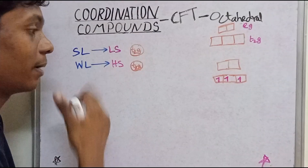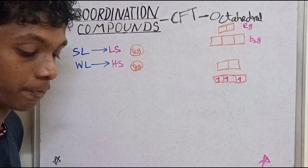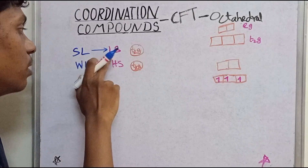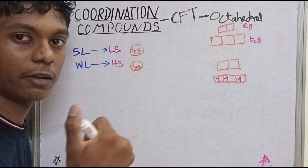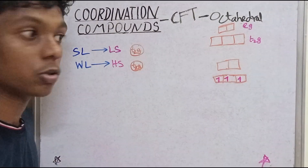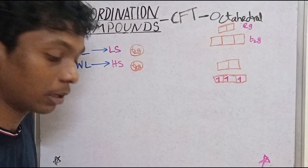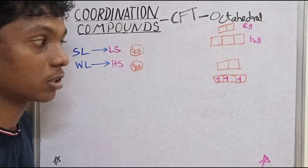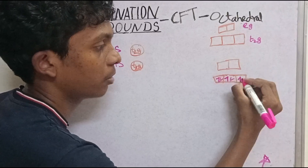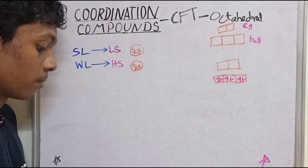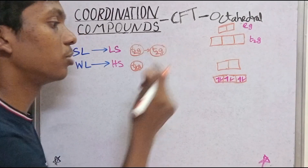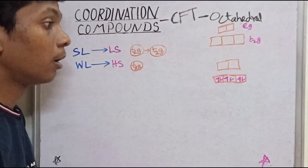Now let's start with low spin and high spin complex. Strong ligand is strong, so it causes pairing. If you know how strong ligand behaves, you can fill accordingly. So let's start with the key — the key is T2G, which we fill first.